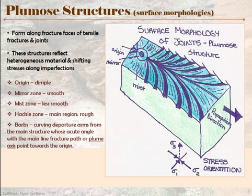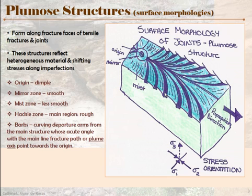The hackle zone is very rough, and it's not as apparent as we draw it in the cartoon — you need to look at actual pictures of it, as it's a little less easy to read in real rock. In this zone you have all these little barbs that curl off of it, representing curl-offs of the stress in relation to those imperfections. The acute angles that they create with the plume axis point back towards the origin, showing the propagation direction.